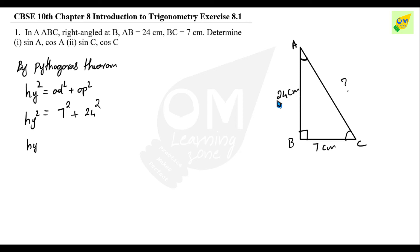We need to find hypotenuse squared. 7 squared is 49, and 24 squared is 576. So 49 plus 576 equals 625. Therefore, hypotenuse squared is equal to 625, so hypotenuse equals 25 cm.